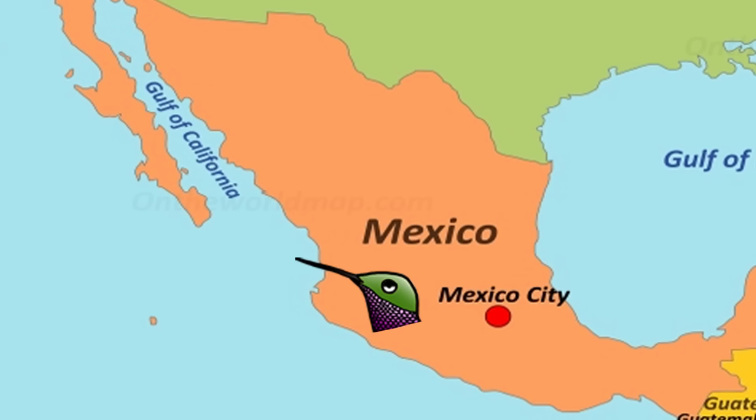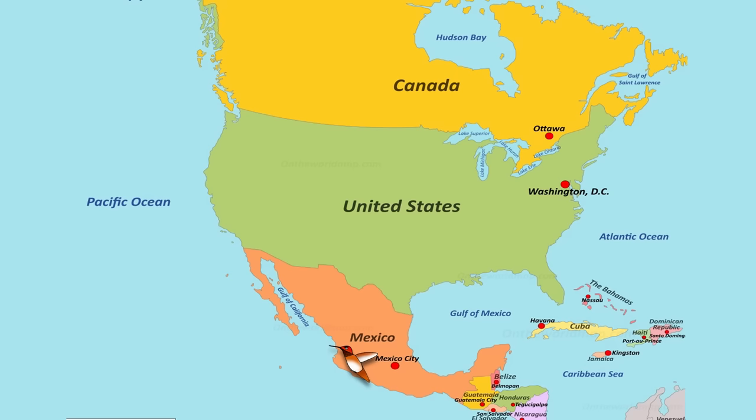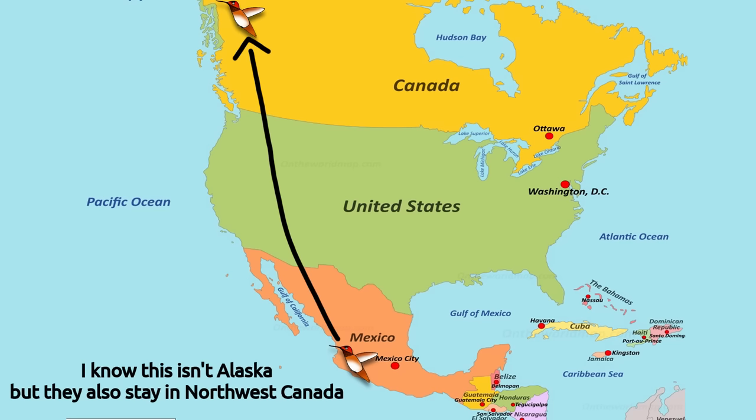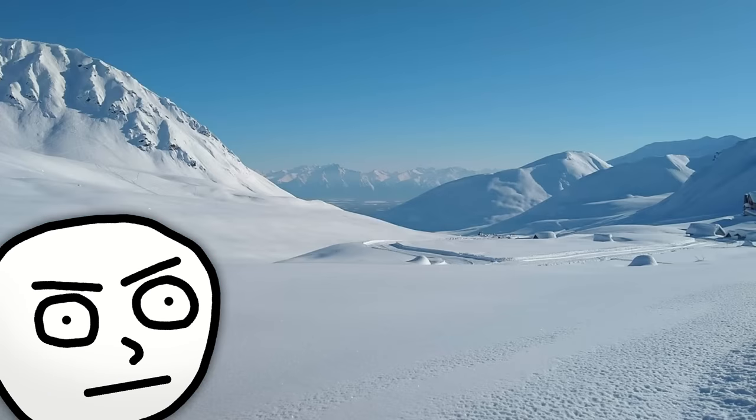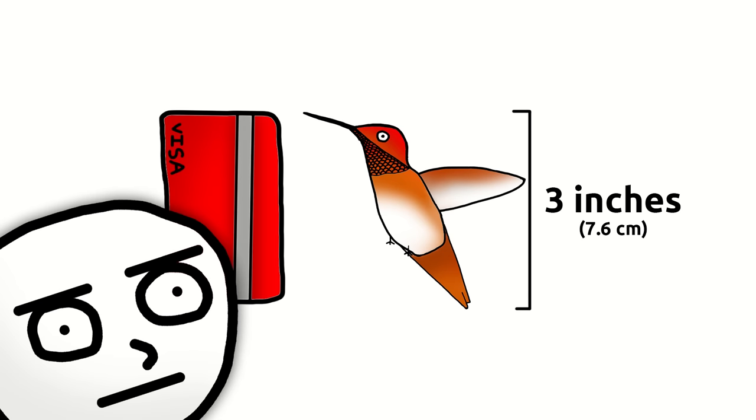Dog, we're in Mexico. Yes, you heard that right. There is a hummingbird crazy enough to go from Mexico to Alaska. Out of all places, you picked Alaska? And this bird is the size of a credit card? Nah. Nah, I'm done. I'm done.